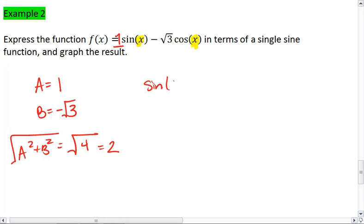Then sine of phi equals b over 2, which is negative root 3 over 2. Cosine is 1 over 2.